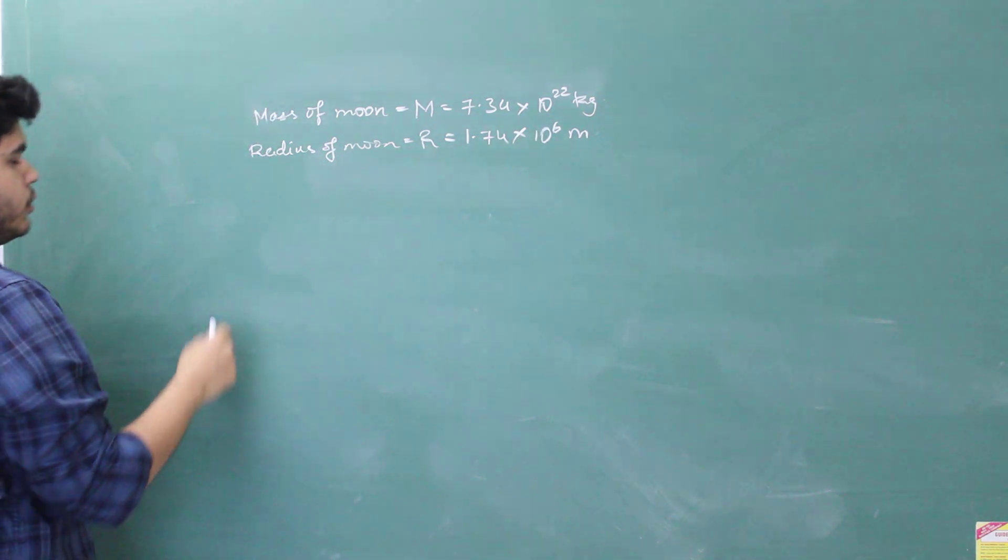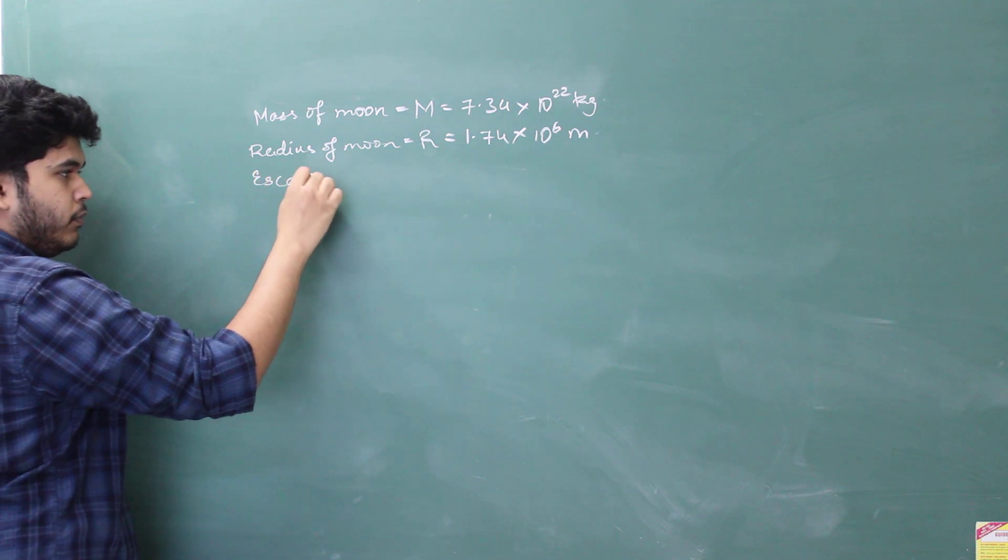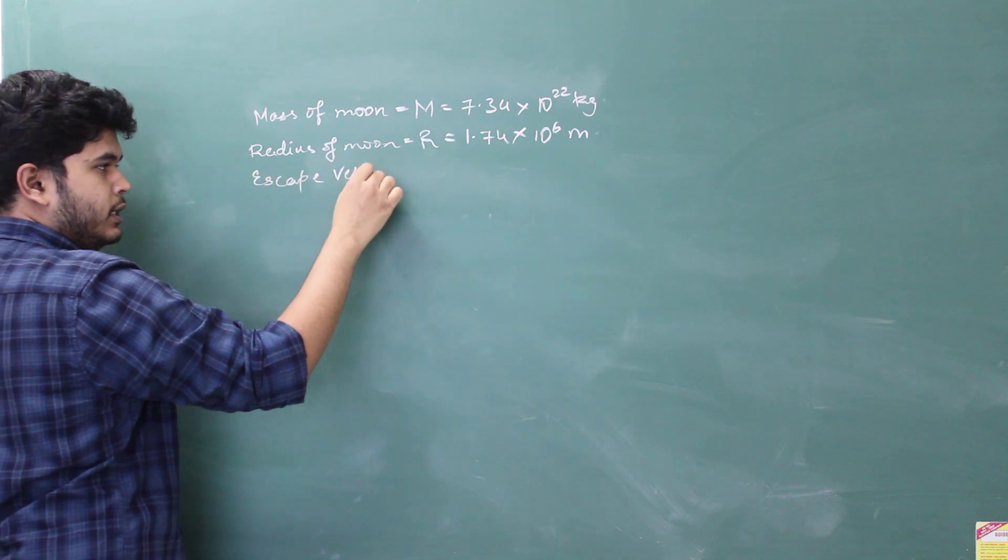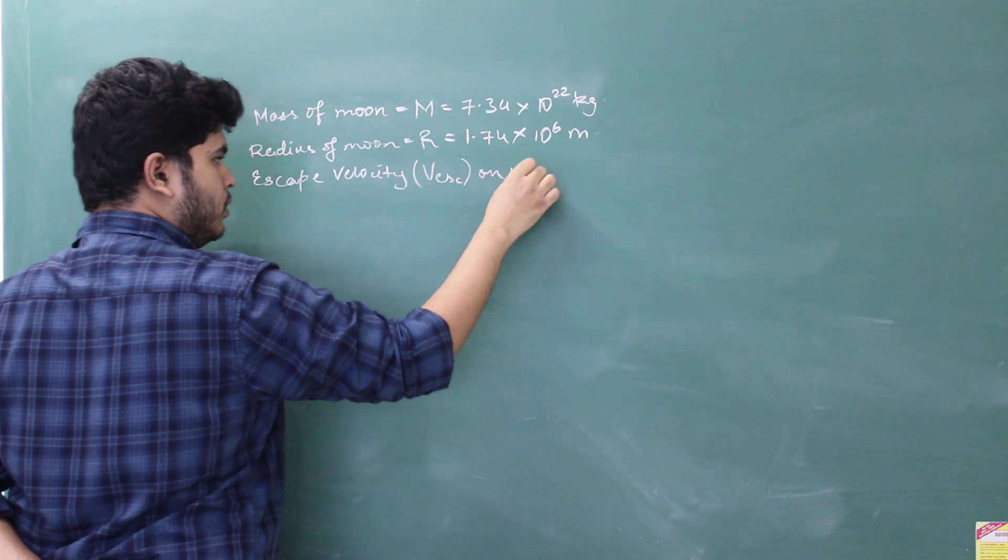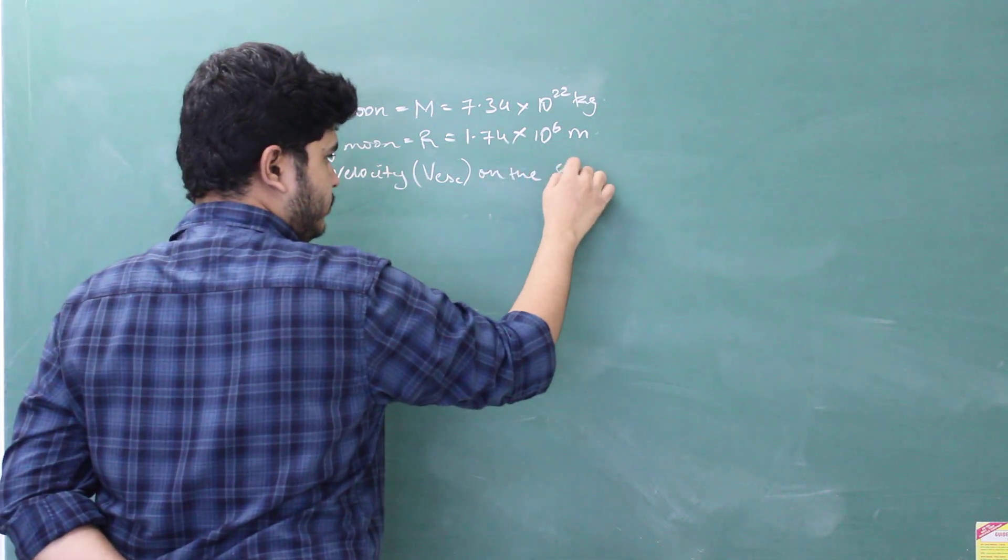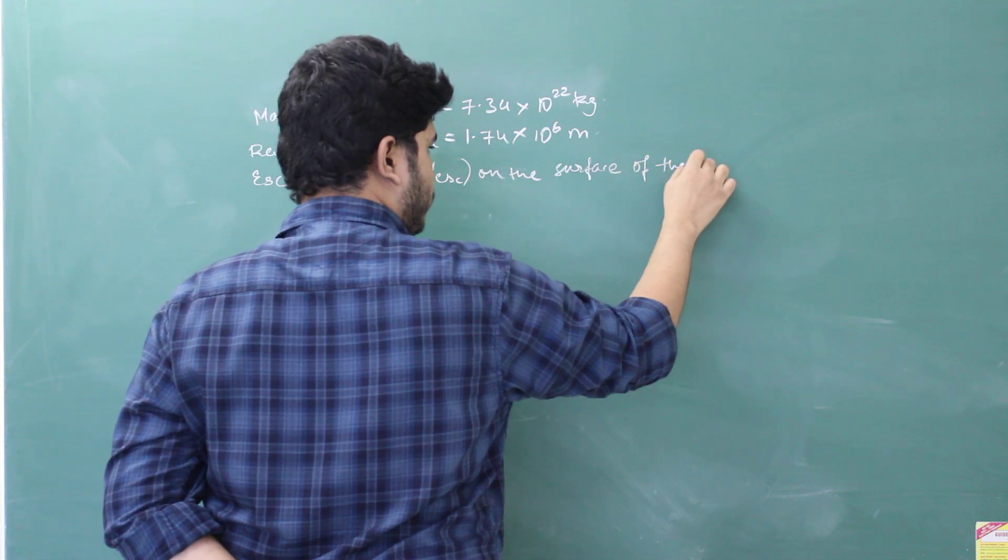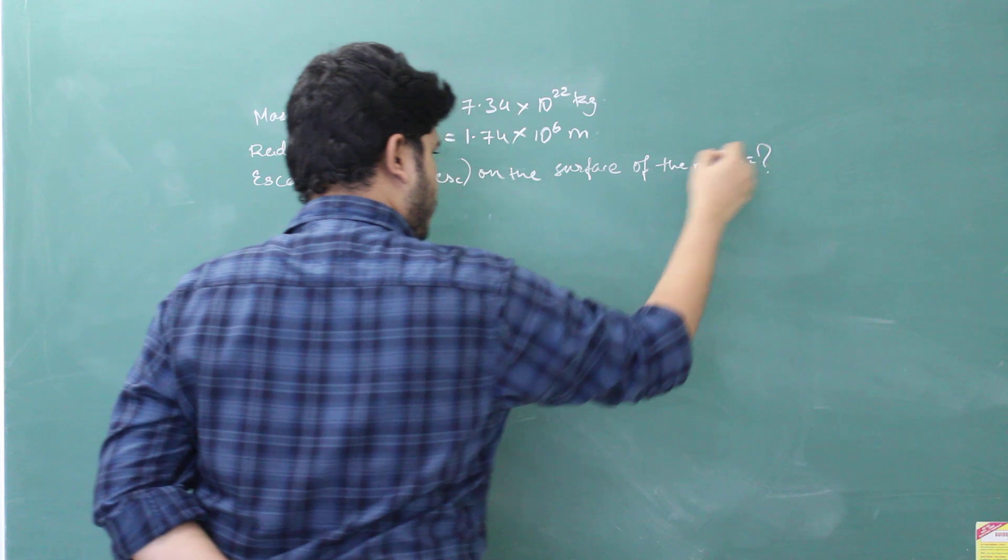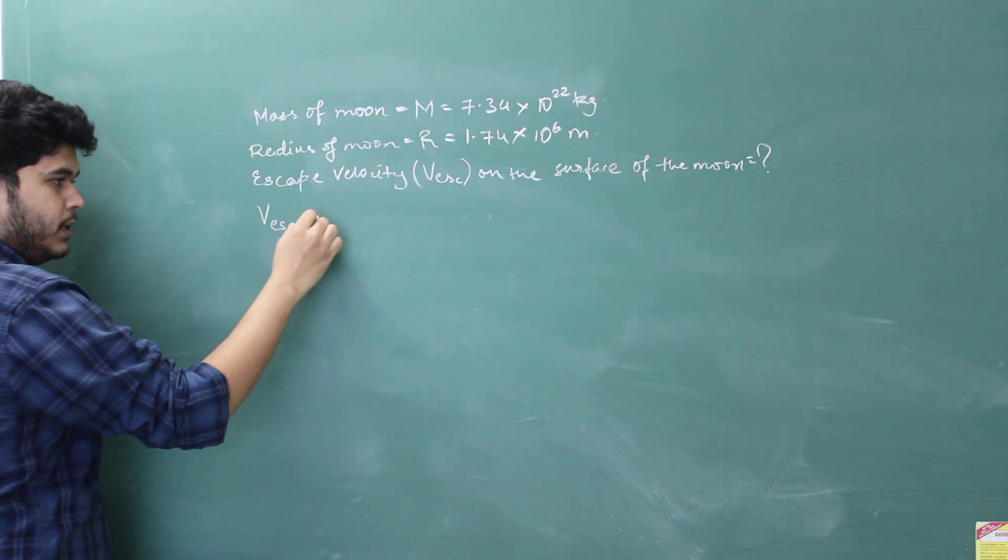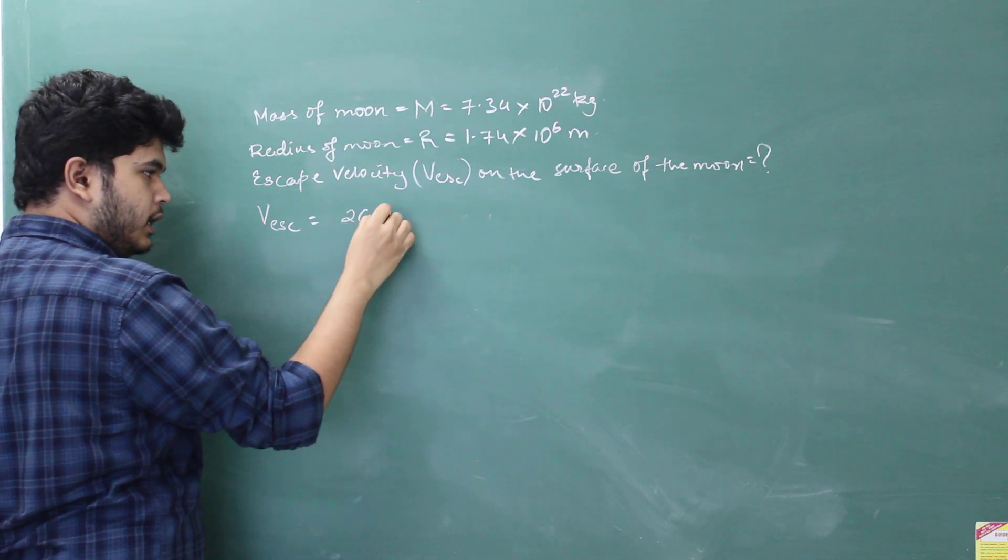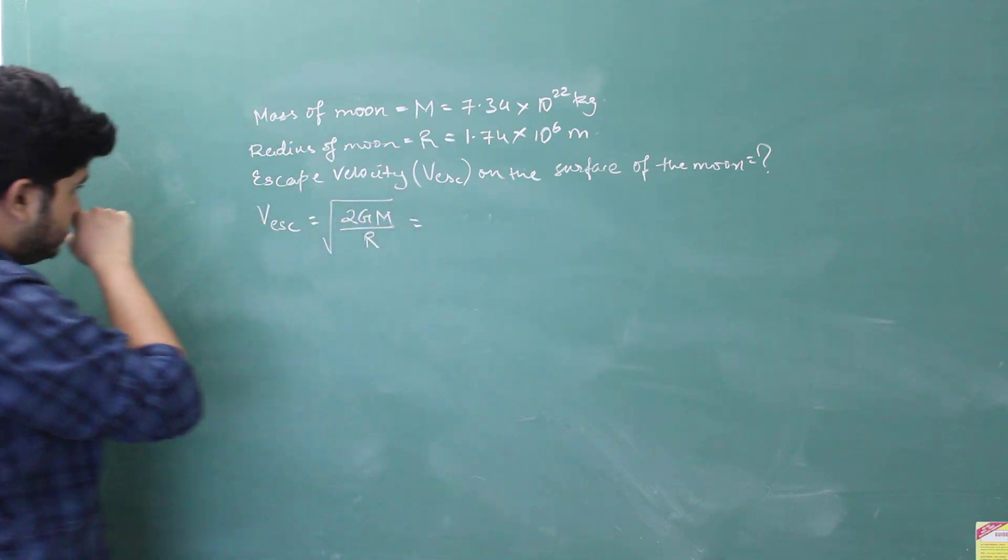Alright. So, mass of Moon and radius of Moon. We need to find escape velocity, which is V_escape on the surface of the Moon. So, formula for V_escape is equal to √(2GM/R). Using this formula. Alright.